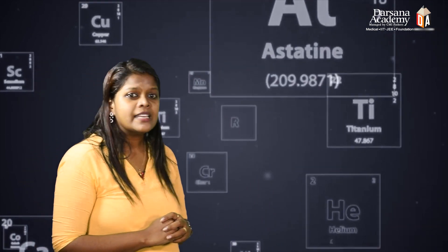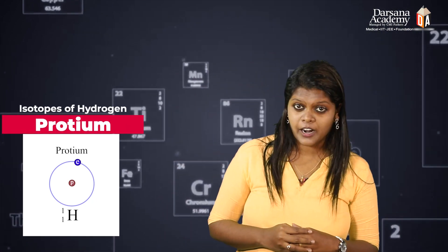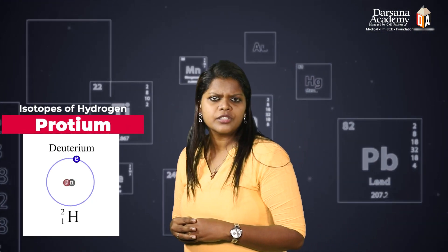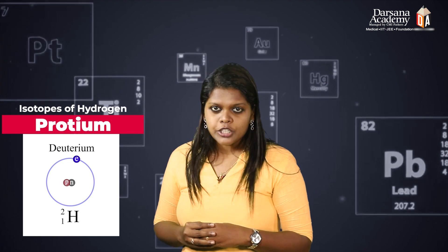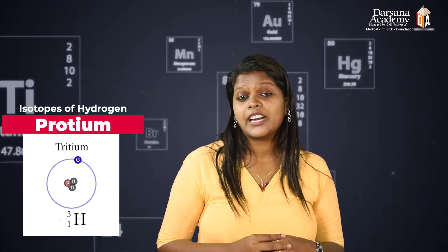Now, what are the isotopes of Hydrogen? There are three isotopes. First, ordinary hydrogen — that is Protium, written as 1H1. Then heavy hydrogen, Deuterium, written as 2H1. And then Tritium, written as 3H1. So these are the three isotopes of hydrogen.